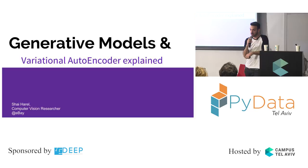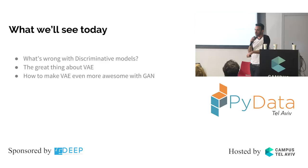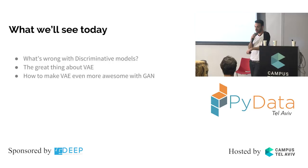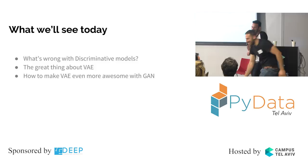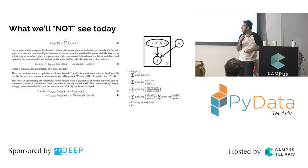Today we're talking about generative models in general, and variational autoencoders — my personal favorite generative model — in particular. We'll cover what is wrong with discriminative models, what is great about variational autoencoders, and how variational autoencoders can be improved using GAN. Let's get started.